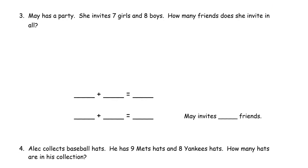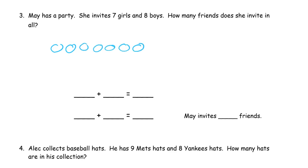Number 3. May has a party. She invites 7 girls and 8 boys. How many friends does she invite in all? So we need 7 girls — 1, 2, 3, 4, 5, 6, 7. G for girls. Boys, we need 8 — 1, 2, 3, 4, 5, 6, 7, 8. B for boys.